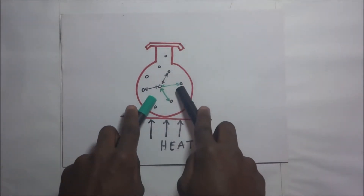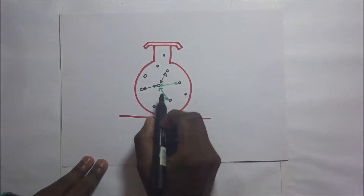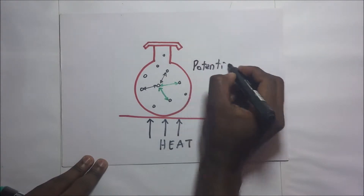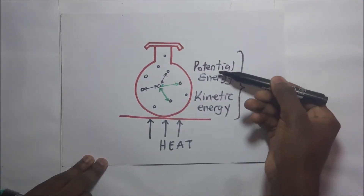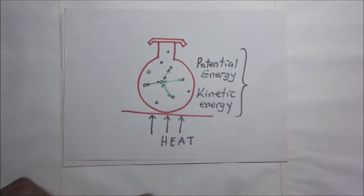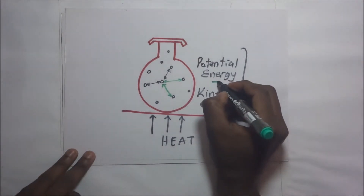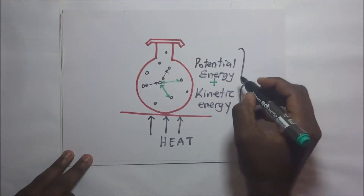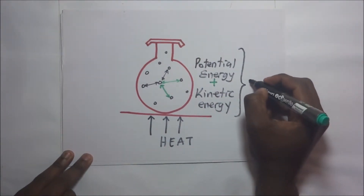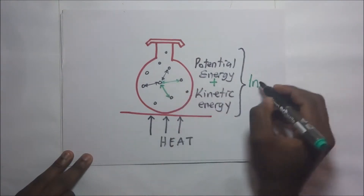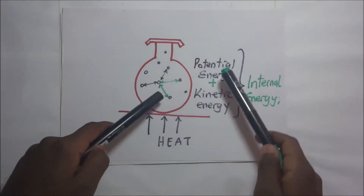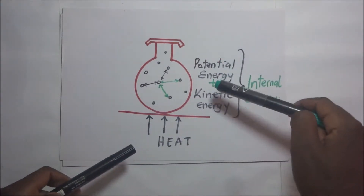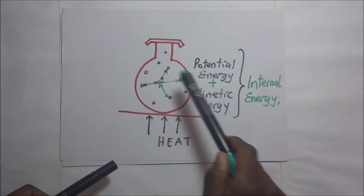When we look at a system like this one, we see that these molecules have both potential energy and kinetic energy. The summation of the potential energy and the kinetic energy is what gives us the internal energy of this gas. So the internal energy of the gas is simply the sum of the potential energy and the kinetic energy of the particles of the gas.